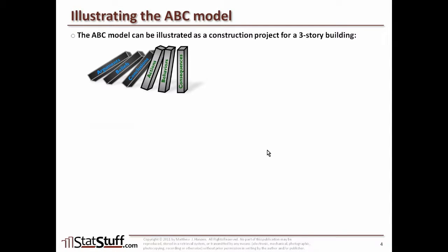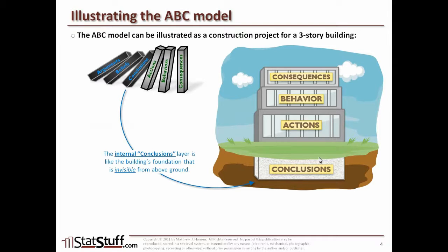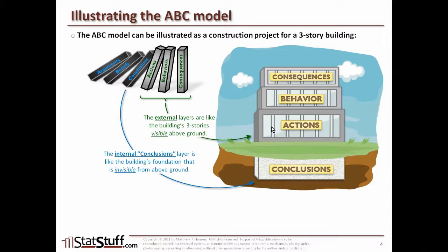There are six layers altogether — three internal ABC layers and three external ABC layers. Using the example of constructing a three-story building, the internal layers serve as the foundation, which is typically invisible from above ground. Just as a building's foundation is underground and invisible, the internal attributes of the ABC model are invisible to others. Built on top of that, the visible parts — actions, behaviors, and consequences — are like the three stories of the building that others can see.